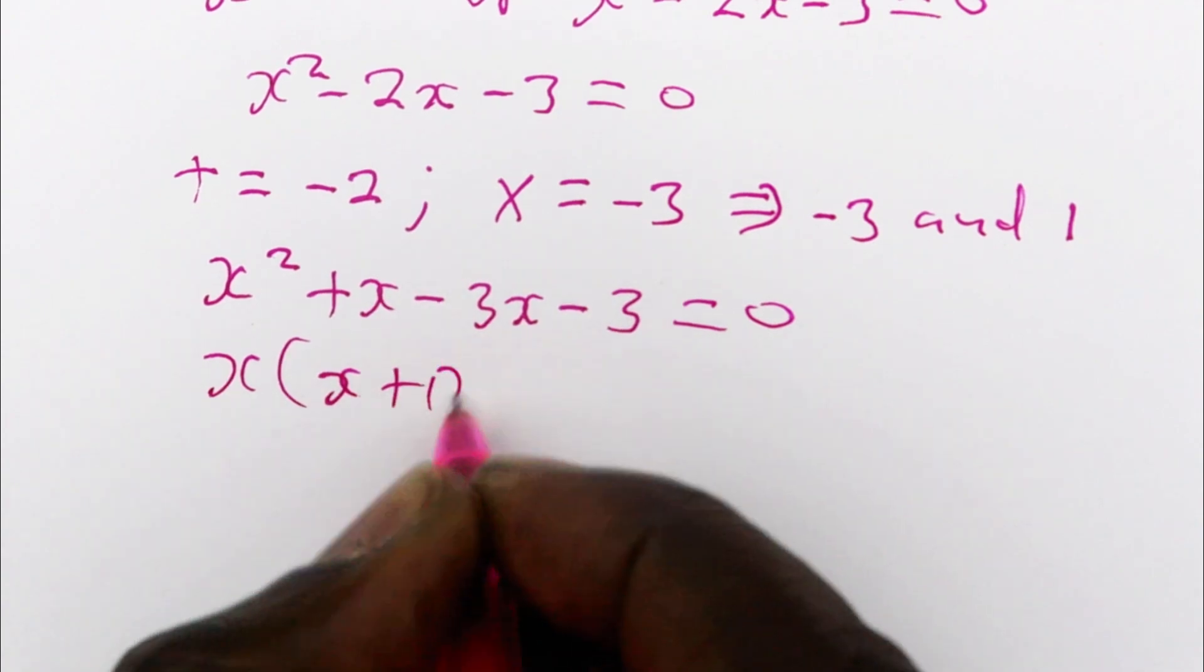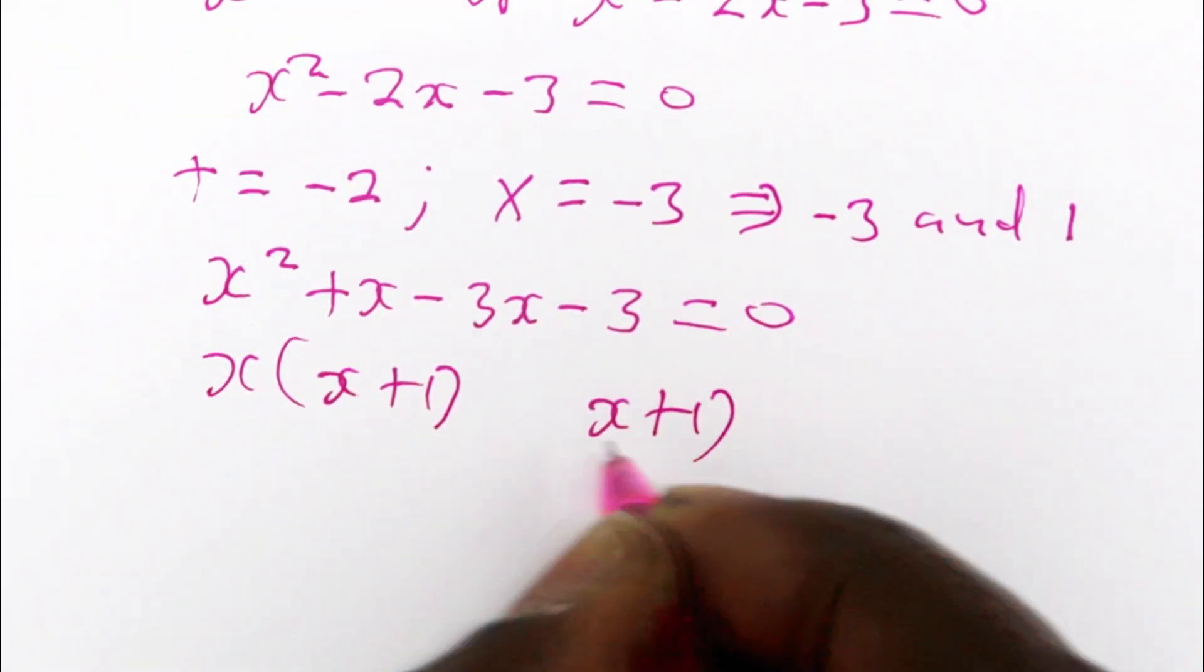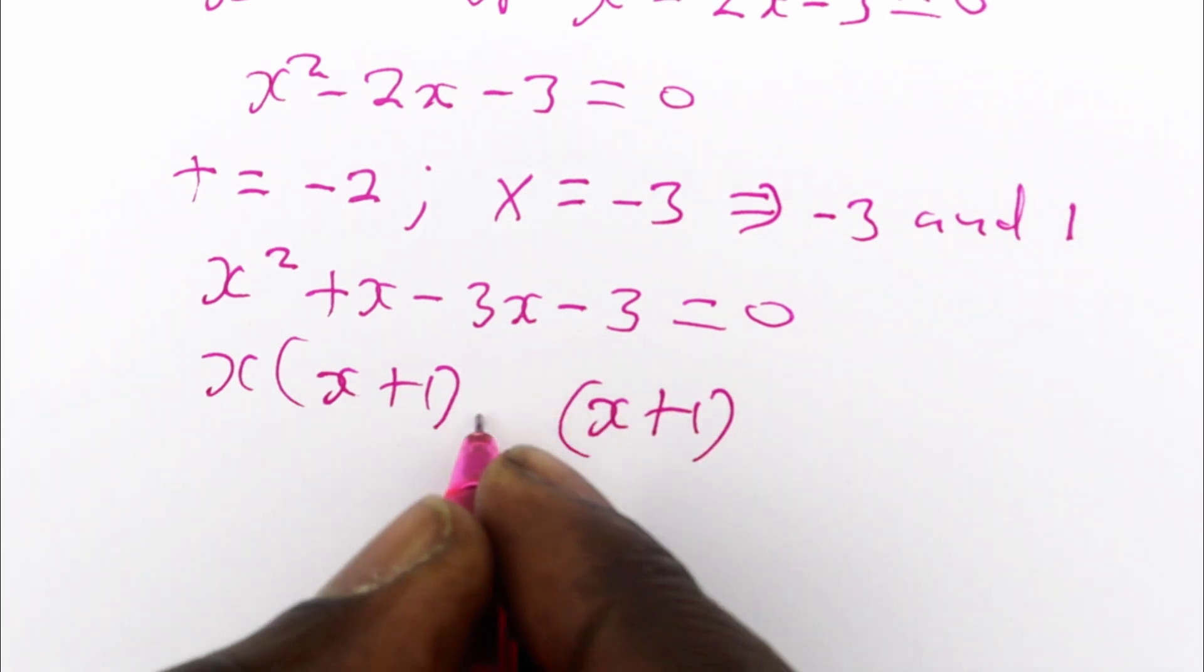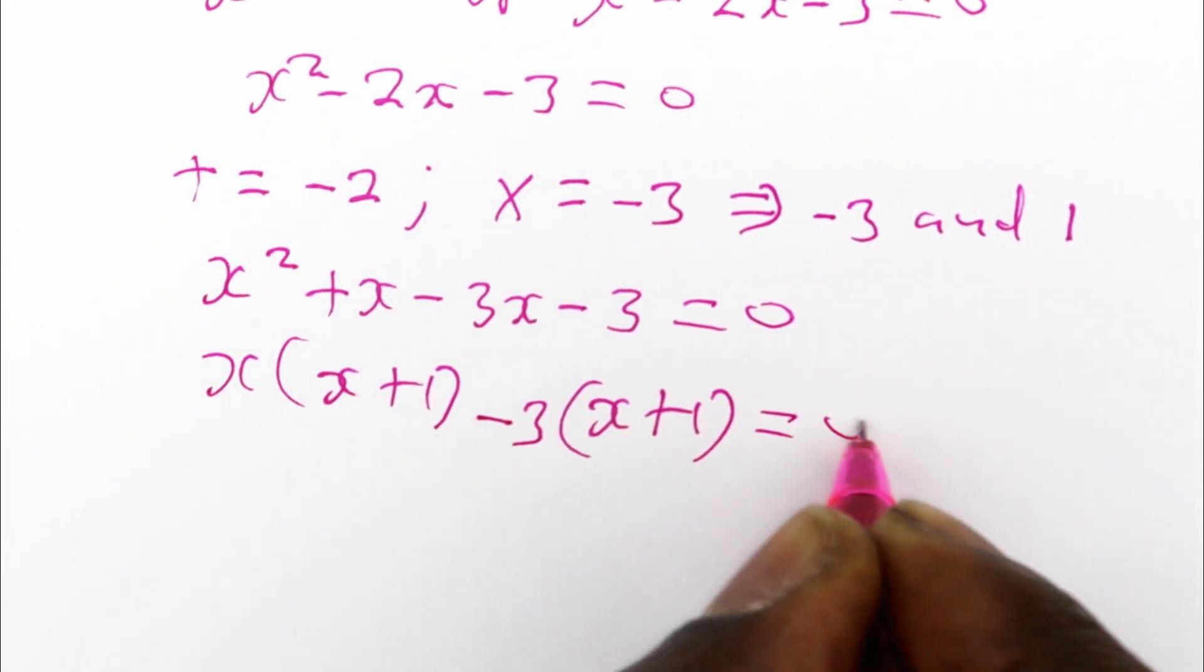So you have x into x plus 1. So you expect x plus 1 this side and you have a negative 3. It means you multiplied 1 by negative 3 and that's equal to 0.